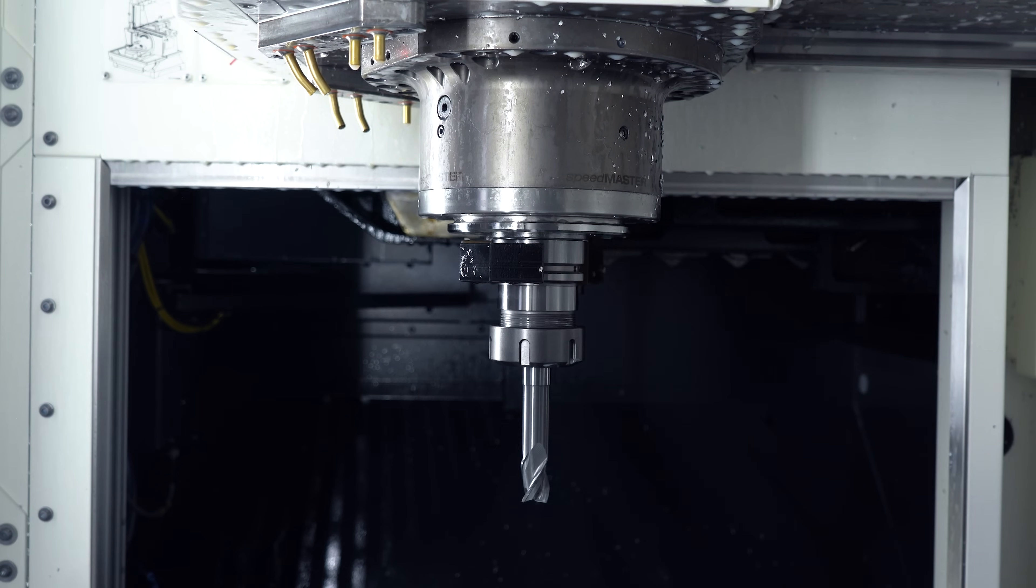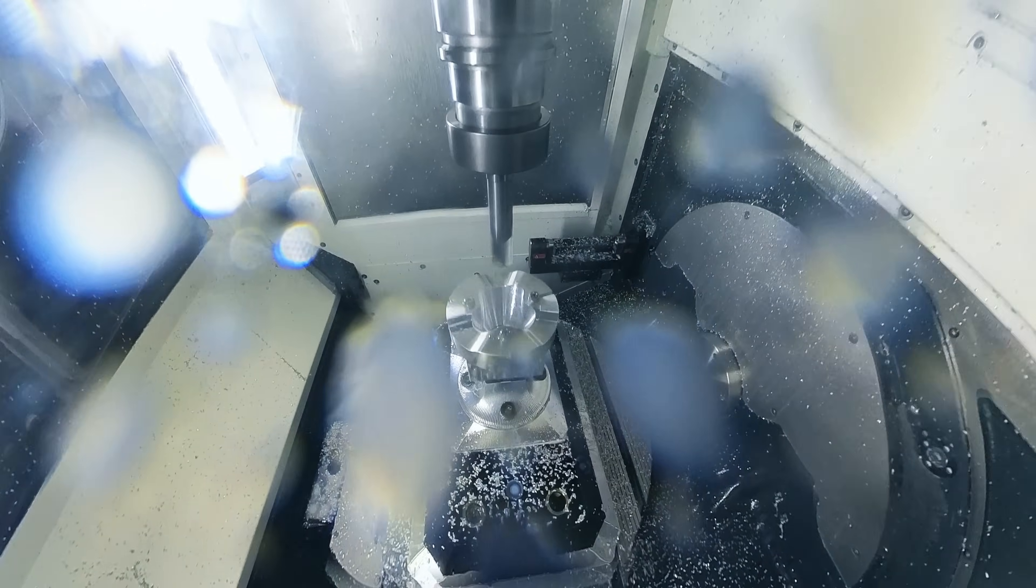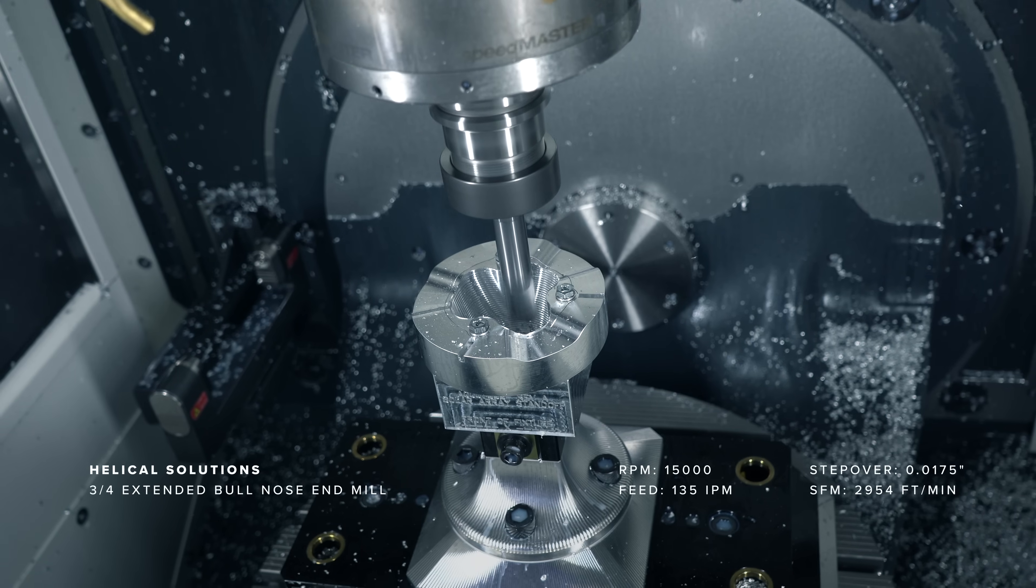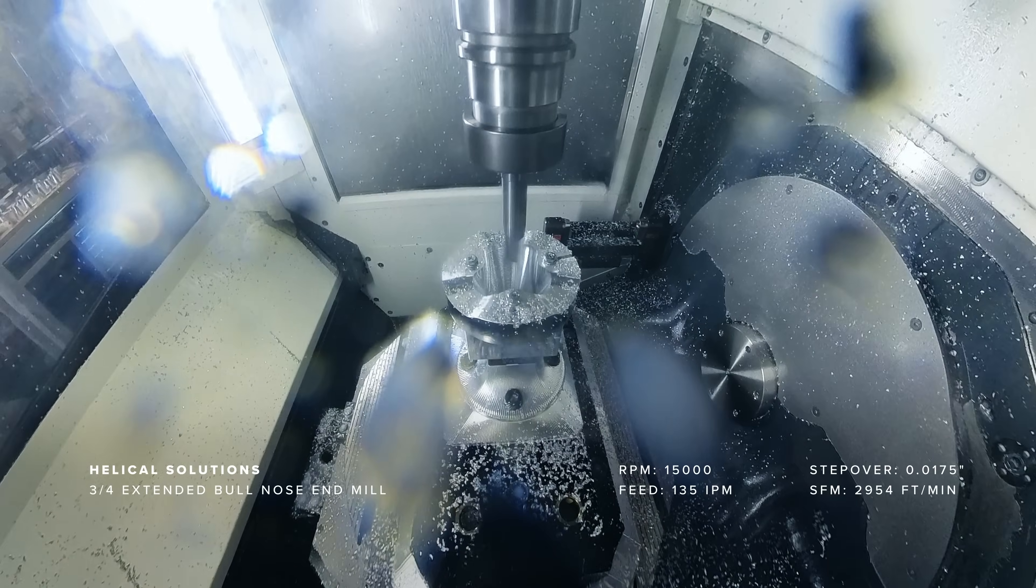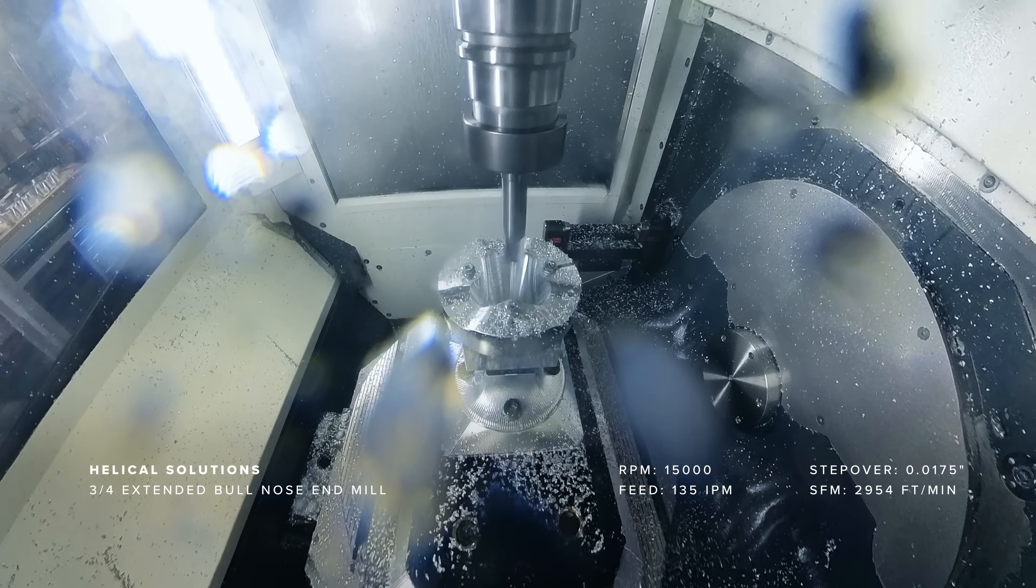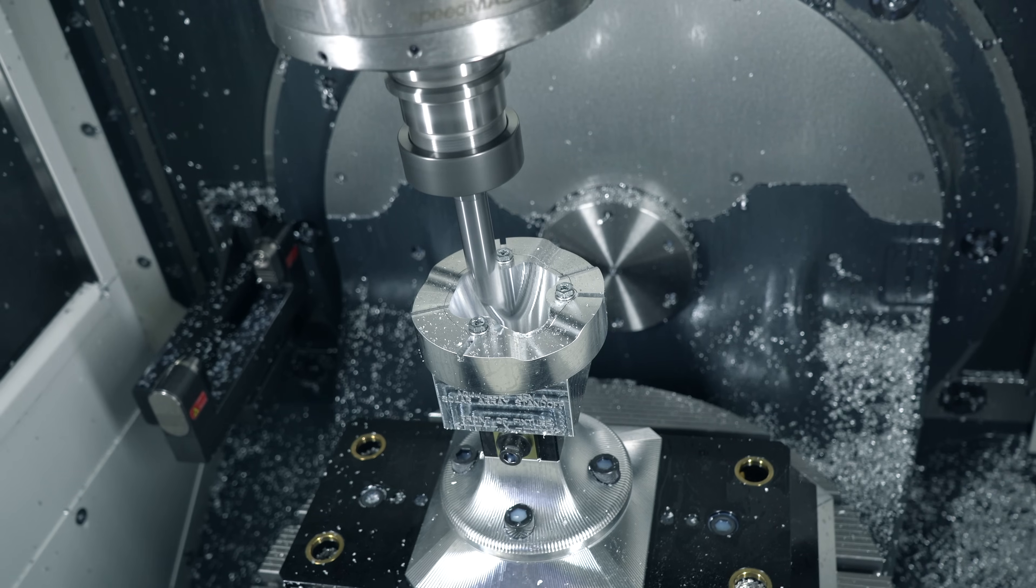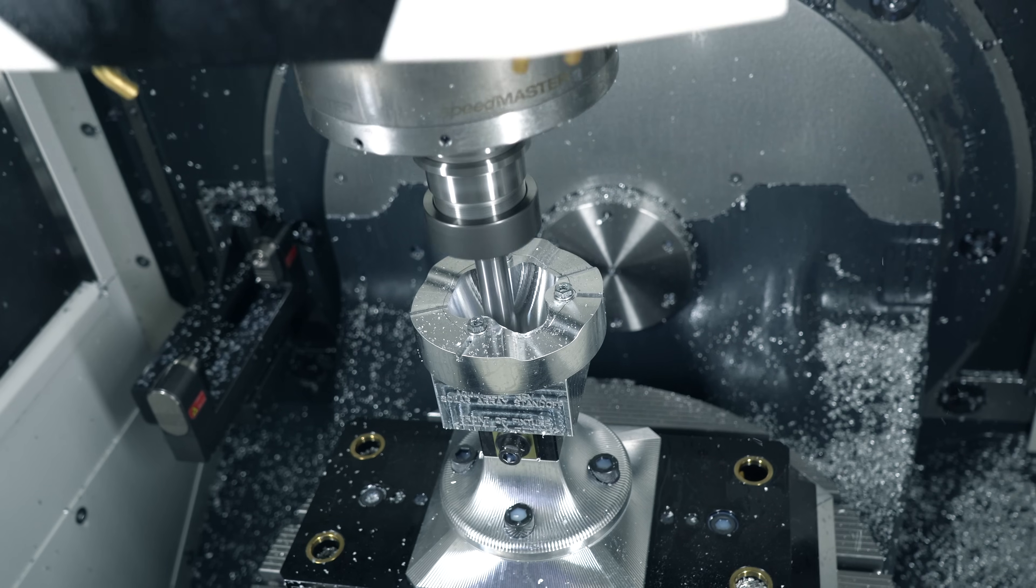Now it's time to switch to a long reach three quarter inch three flute bullnose end mill at 15,000 rpm. Using a non-traditional plunge finishing strategy takes care of the tight fillet at the bottom while still being able to take large step overs.